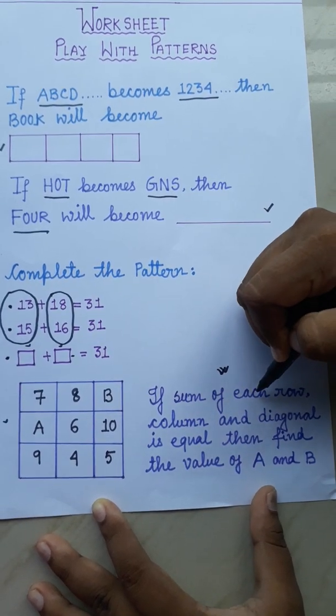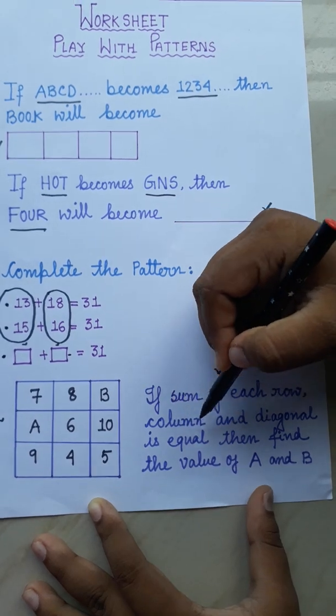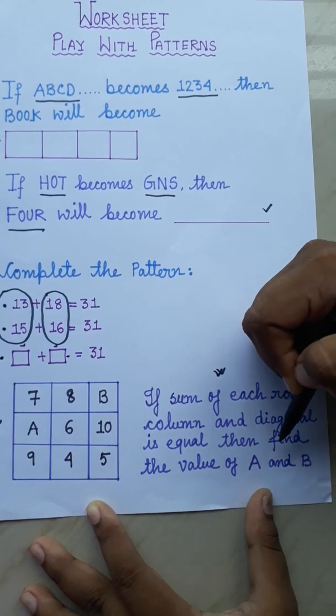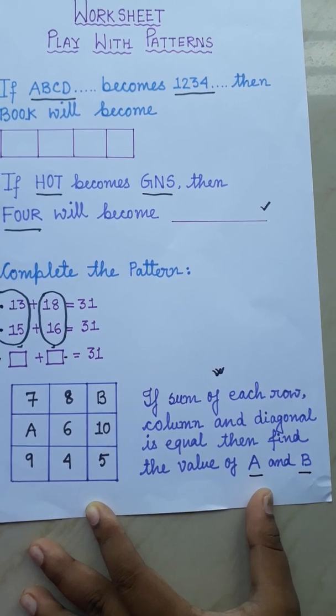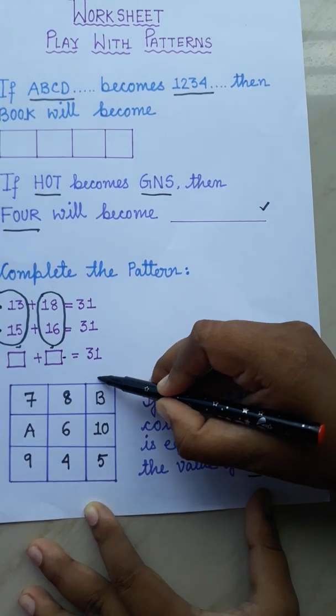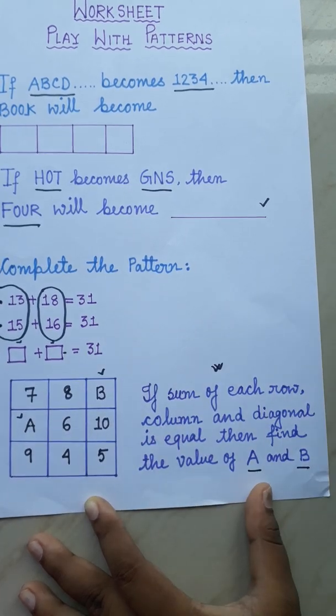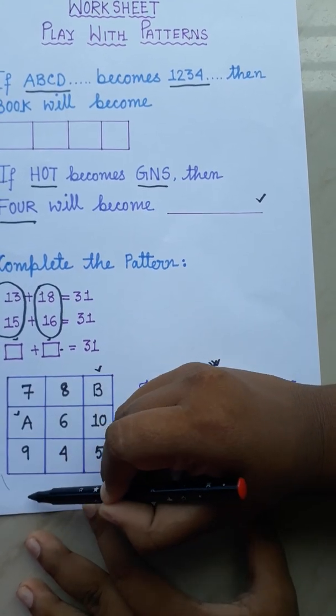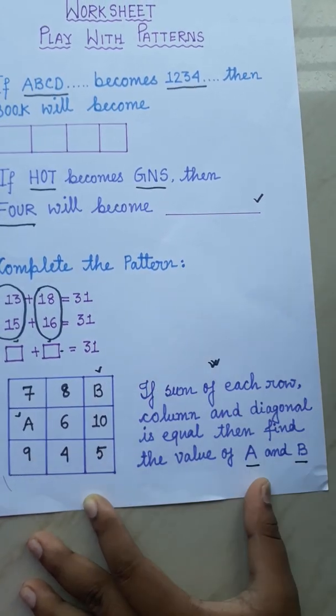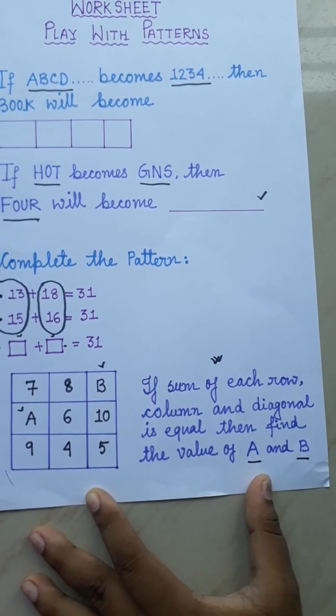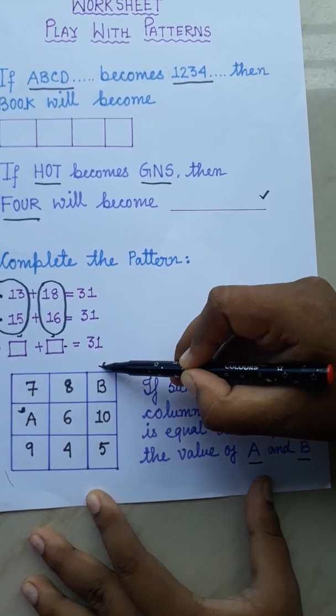If sum of each row, column and diagonal is equal, then find the value of A and B. You have to find the value of A and B. If the sum of each row, each column and each diagonal is equal, then you have to find the value of A and B.